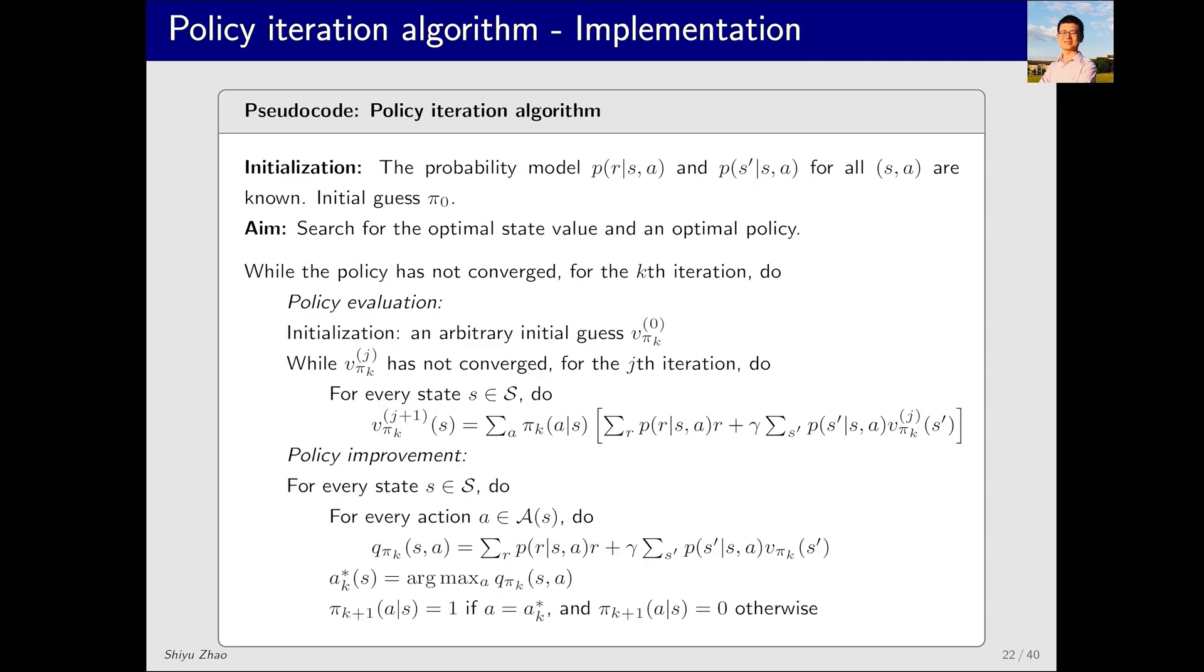This whole process can be summarized as this pseudocode. For each iteration, say the kth iteration, there are two steps: policy evaluation and policy improvement. In policy evaluation, our goal is to solve vπk. I start with an initial guess, which can be any value, then substitute this guess into an iterative algorithm until vπk^j converges. Now I've obtained vπk. Next, in policy improvement, we first traverse all states. For each state, I traverse all actions. Having just solved vπk, we can use this to calculate qπk. What follows is straightforward. My new policy πk+1 is to choose the action corresponding to the largest qπk. After calculating πk+1, I return to this step to compute vπk+1, continuing this iterative cycle.